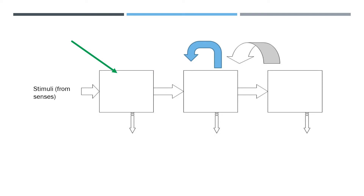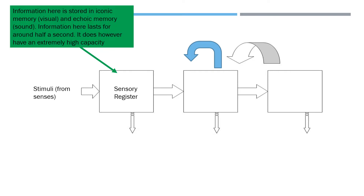So what is the actual model doing? The input on the very first bit is stimuli from senses — anything like light, noise, smell — anything that comes into your senses first enters the sensory register. The sensory register is the first thing in your memory according to the multi-store model. Information here is stored in iconic memory, which is visual, and echoic, which is sound — that's its coding. Information here lasts for around half a second; it's extremely quick. If you don't take it in fully, you won't remember it — it's forgotten.